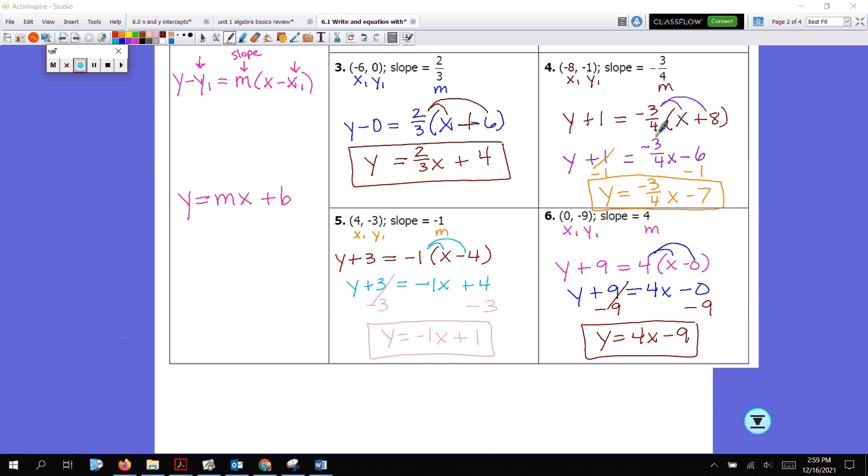Then I subtract 1 from both sides and I get y equals negative 3 fourths x minus 7. Number 5 was nice and neat because there was no fraction. So you should have ended up with y equals negative 1x plus 1. Number 6, y equals 4x minus 9. All right. Let's see what else we got here.